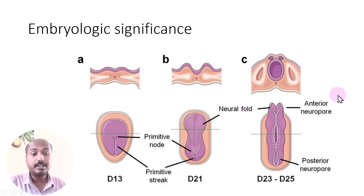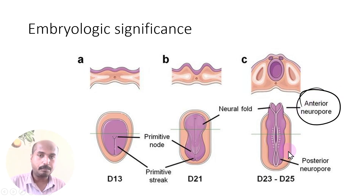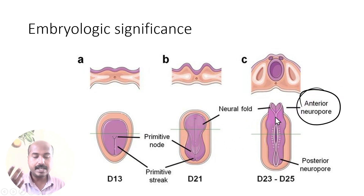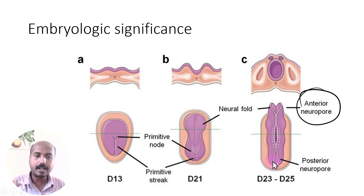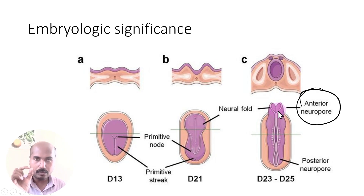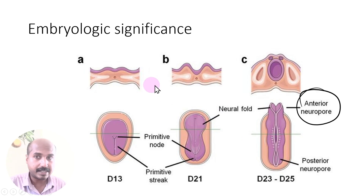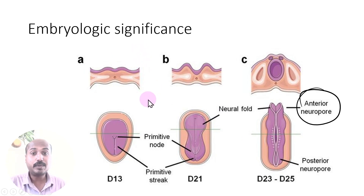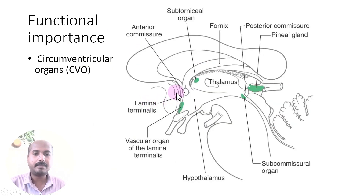The lamina terminalis also has embryological significance. During neurulation, the neural tube has an anterior neural pore and a posterior neural pore. The anterior neural pore closes, and the closed part becomes the lamina terminalis. This gives it an important role in embryological development.